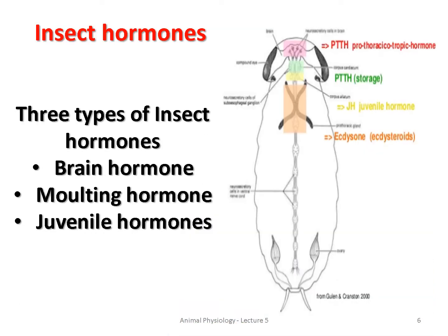Now, let's look at insect hormones. There are basically three types of insect hormones: Brain Hormone, Molting Hormone, and Juvenile Hormone.